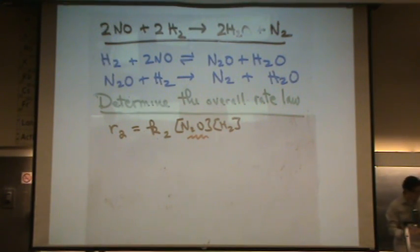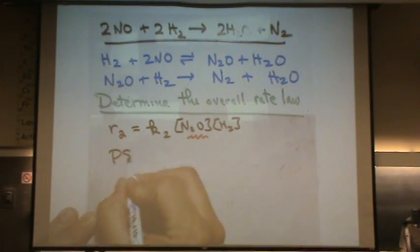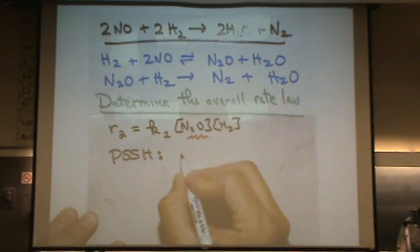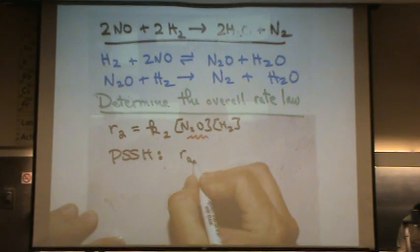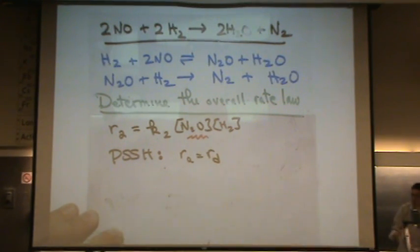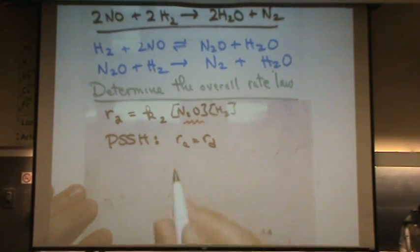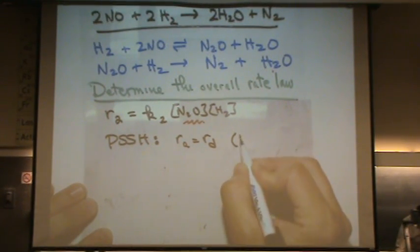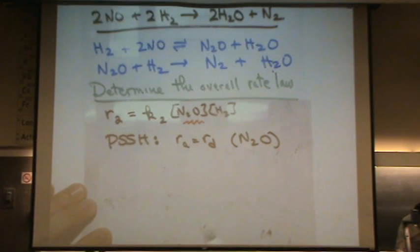So now we're going to use the pseudo steady state hypothesis. Where rate of appearance equals rate of disappearance. Or if you prefer, rate at which you see intermediate in the reactants equals rate at which you see in the products. So for example, our intermediate is N2O. Let's do appearance, so where it is in the products. So for which reaction is N2O in the products?